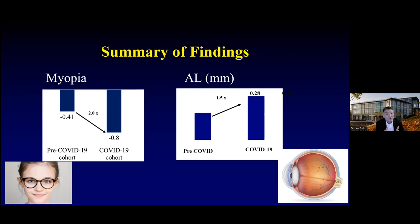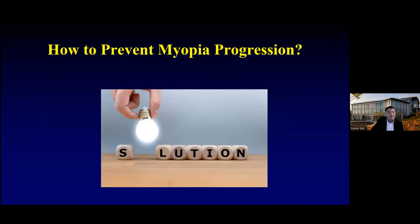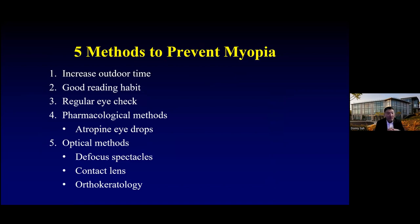The 0.28 millimeter increase does not seem like a lot, but it is significant — a significant growth. So how do we prevent this myopic epidemic that has been sped up by COVID-19? There are five options: increasing outdoor time, good reading habits, regular eye checks, pharmacologic methods, and optical methods.